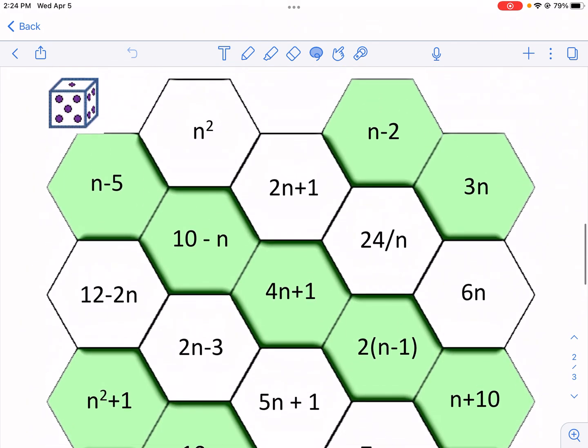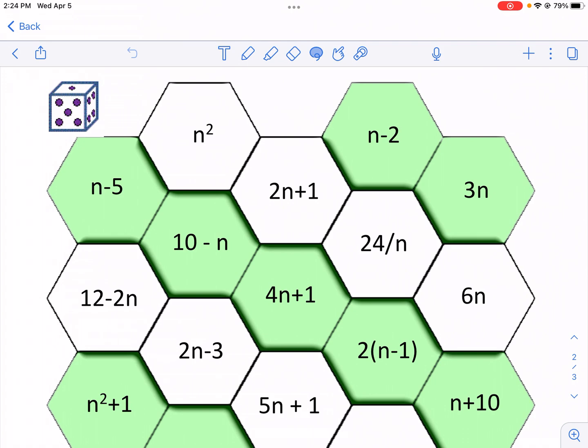Then you're gonna take turns. If you get it right, you get to keep that hexagon and you want the most hexagons out of those that you're playing against. Those with the fewest lose. I'm gonna go ahead and roll the dice and show you how this works.